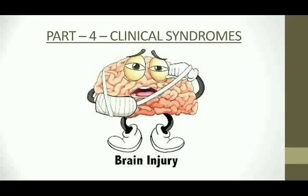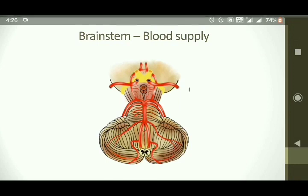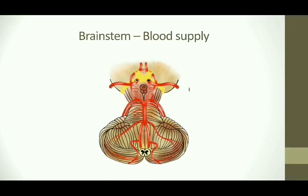Hello everyone. We are done with the normal anatomy of the brain stem, and now we are moving to the applied anatomy part. Have you ever heard of stroke? It is the most common etiology of brain injury which results in various clinical syndromes. We will see them one by one. Arterial supply of the brain stem has a direct association with these syndromes. Any blockade to a vessel causes ischemia to the particular area of brain it supplies, leading to various problems. So you have to know the arterial supply very well.